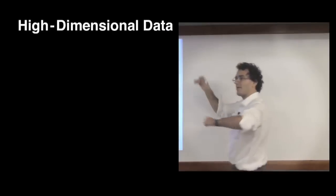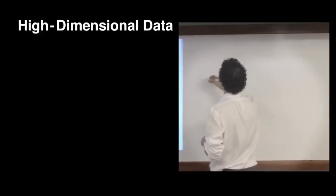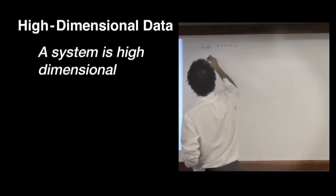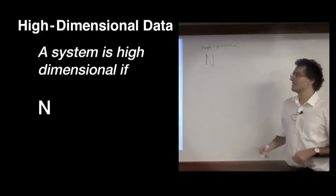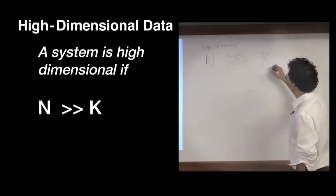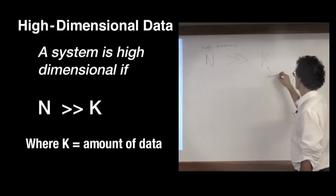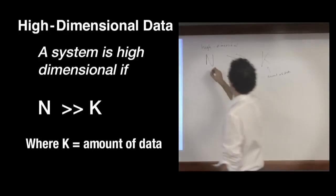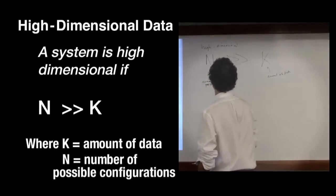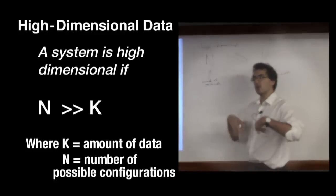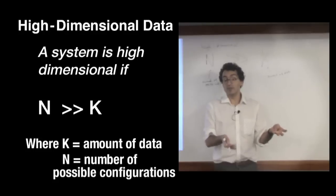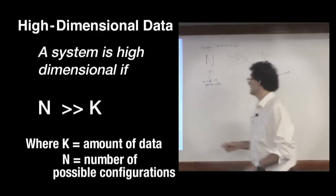So high-dimensional data, as a kind of working definition, we'll say something along the following lines. A system is high-dimensional if the number of configurations, which we'll call n, is much, much greater than the amount of data that we have, and we'll call that k. So this is amount of data, and this is number of possible configurations. So the number of ways the system could look is much, much greater than the number of ways you've actually observed it in the real world, the number of times you've observed it in the real world.